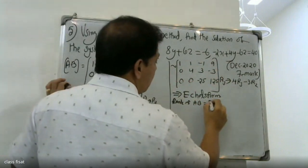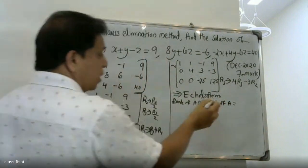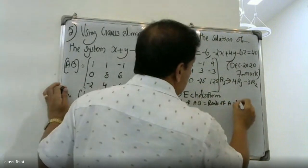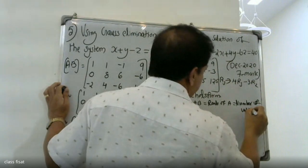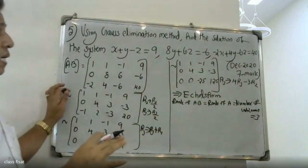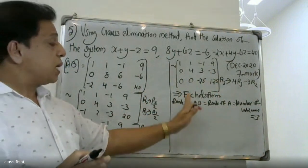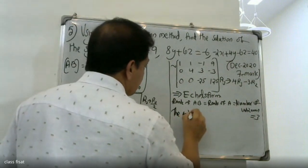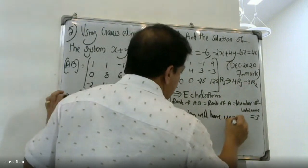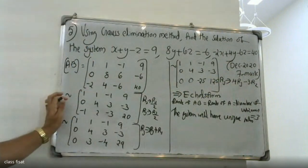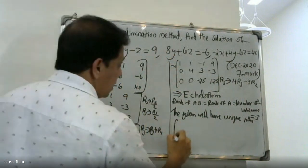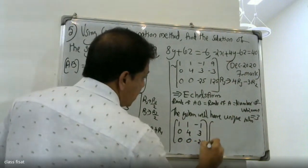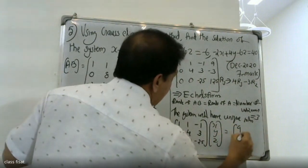Rank of A equals rank of augmented matrix A|B, therefore the system is consistent. The system will have a unique solution. The augmented matrix is: 1, 1, minus 1, 9; 0, 4, 3, minus 3; 0, 0, minus 25, with the last column 9, minus 3, 1.